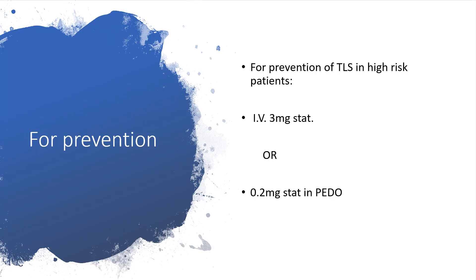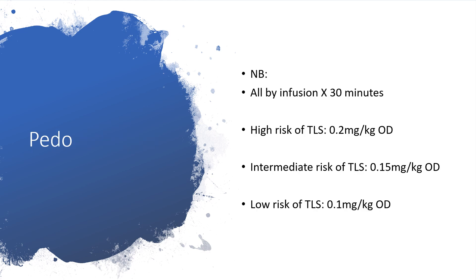For prevention of Tumor Lysis Syndrome, particularly in at-risk patients, you can administer Rasburicase intravenously: 3 mg as a stat dose for adults, or 0.2 mg/kg as a stat dose in pediatric patients. Just like in adults, all forms of administration of Rasburicase in pediatric patients must be by intravenous route, by infusion over 30 minutes — never bolus.